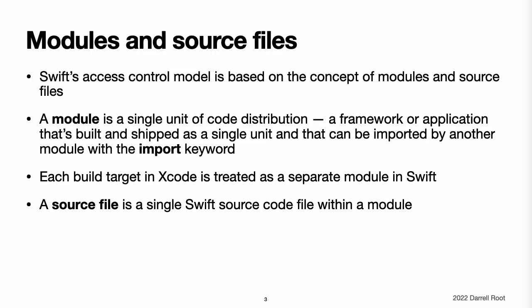Modules and Source Files. Swift's access control model is based on the concept of modules and source files. A module is a single unit of code distribution, a framework or application that is built and shipped as a single unit and that can be imported by another module with Swift's import keyword. Each build target, such as an app bundle or framework, in Xcode, is treated as a separate module in Swift. If you group together aspects of your app's code as a standalone framework, perhaps to encapsulate and reuse that code across multiple applications,